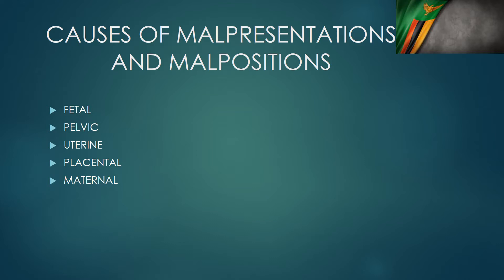Increased liquor volume prevents the fetus from lying in the same position all the time, because with polyhydramnios the fetus will be swimming around and therefore will not lie in a stable way. Low liquor volume, on the other hand, will prevent the fetus from changing its lie easily, and we can also end up with a malpresentation. Maternal causes like a pendulous abdomen — where the maternal muscles are not able to fix the fetus in one place — may also be a risk factor for malpresentation.